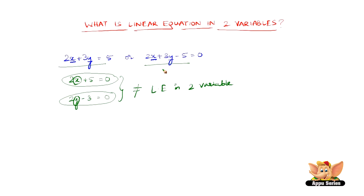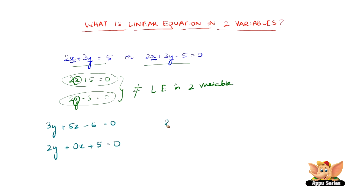Let us quickly see a couple more examples to identify what is a linear equation in two variables and what is not. Here are four equations: 3y plus 5z minus 6 equal to 0; 2y plus 0x plus 5 equal to 0; 3x plus 7 equal to 2; and 4y plus z minus 2 equal to 0.